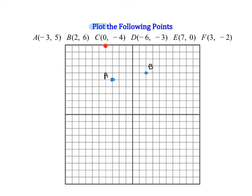Whenever your coordinate has a zero, you need to slow down and really think about it, because this is typically where I see small mistakes. Since my x value is zero, I'm not going to move right or left — I'm going to stay right where I am. My y value is negative four, which tells me to move down four. So (0, -4) is actually on the y-axis. Here's coordinate C.